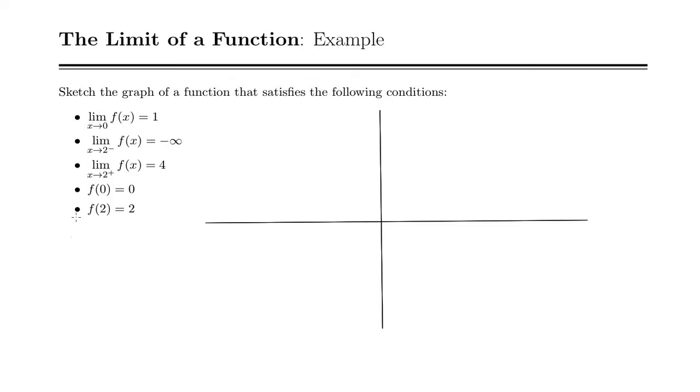We're going to sketch a graph here, and the first thing I'm going to do is just look at these two points. So f of 0 needs to equal 0, so that's that point right there, and f of 2 needs to equal 2. So I've got that point right there.